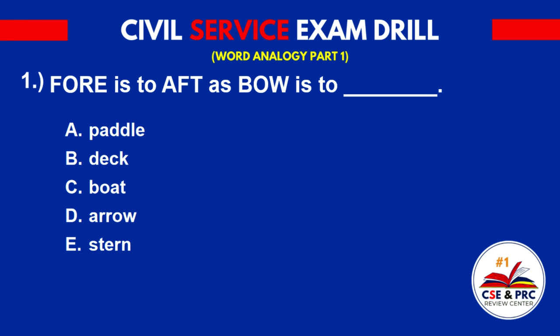Number 1: 'For' is to 'aft' as 'bow' is to blank. A. Paddle. B. Deck. C. Boat. D. Arrow. E. Stern. The answer is E. Stern.